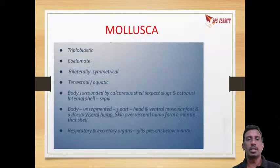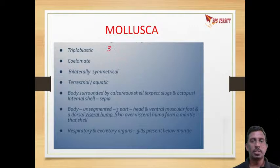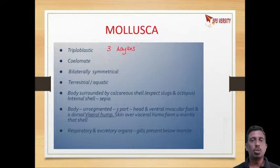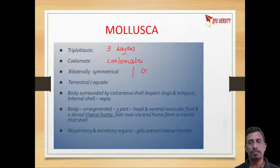In this session we are going to discuss about the next phylum, that is Mollusca. Molluscans are triploblastic — they have three embryonic layers: ectoderm, mesoderm, and endoderm. They have a coelom, so they come under coelomates. When we come to symmetry, they are bilaterally symmetrical — the body can be divided into two equal halves in only one plane.